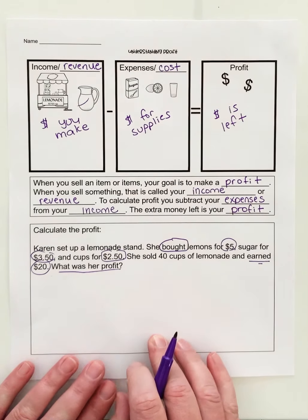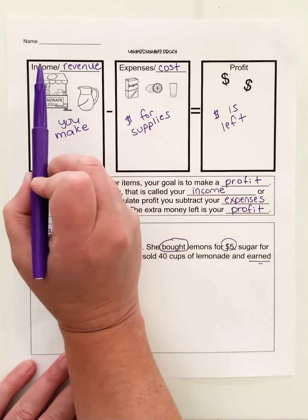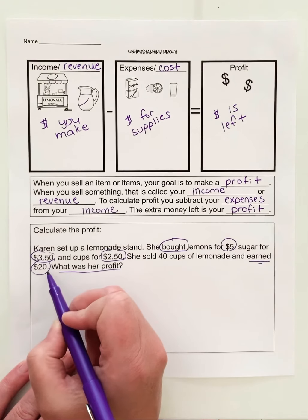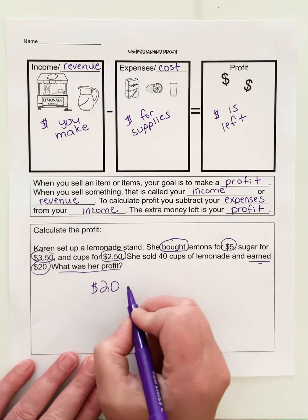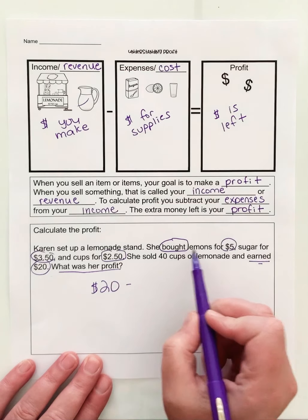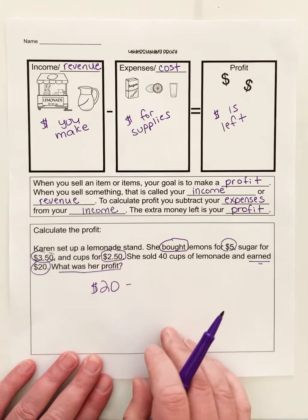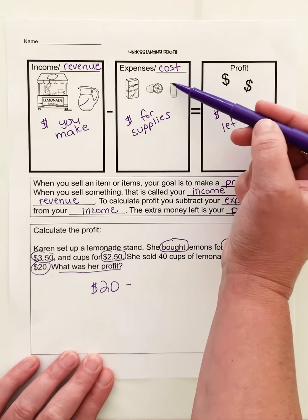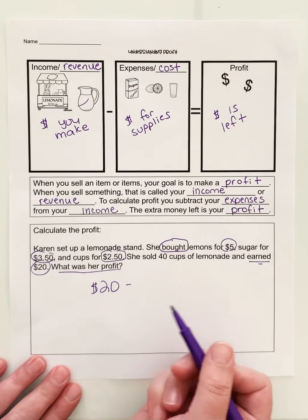So we're going to start with the first part of our profit, income and revenue. How much did she earn? Well, she earned $20. But she had some expenses she had to pay for first. She bought lemons for $5, sugar for $3.50, and cups for $2.50. Now, $5, $3.50, and $2.50, those are her expenses. But let's figure out what the total expense was.